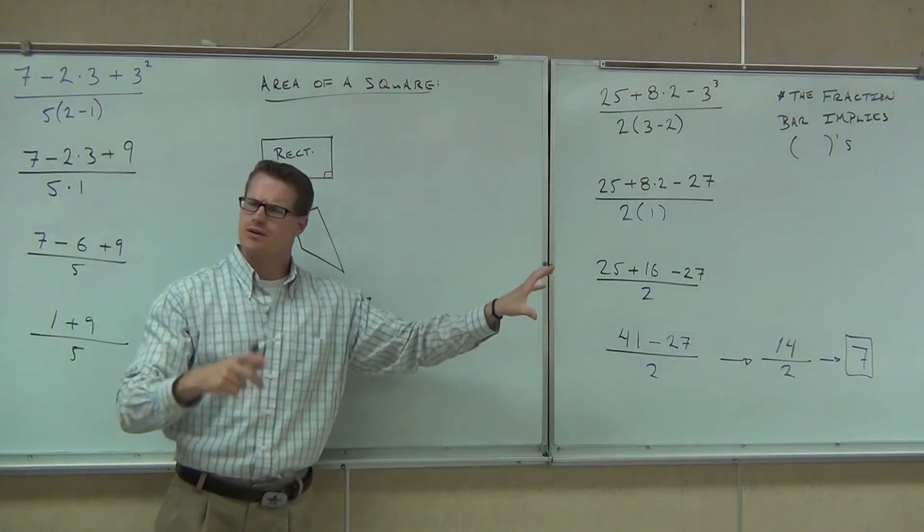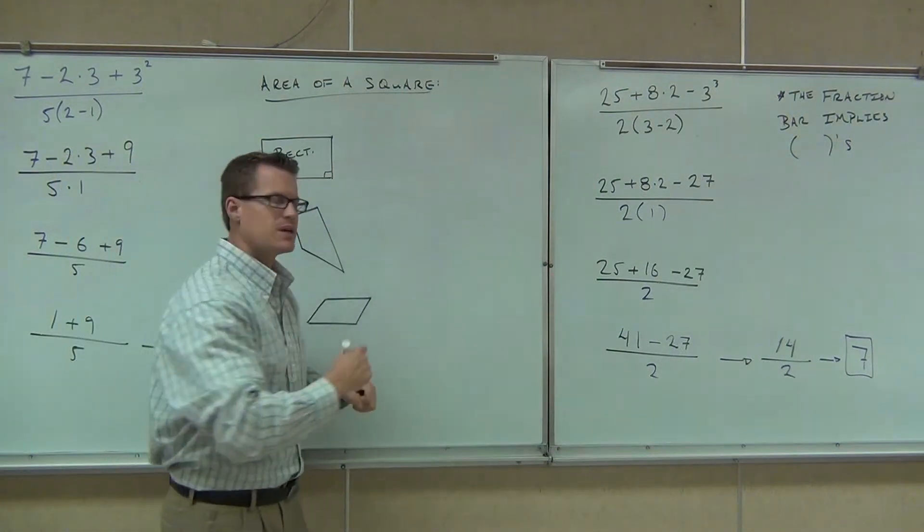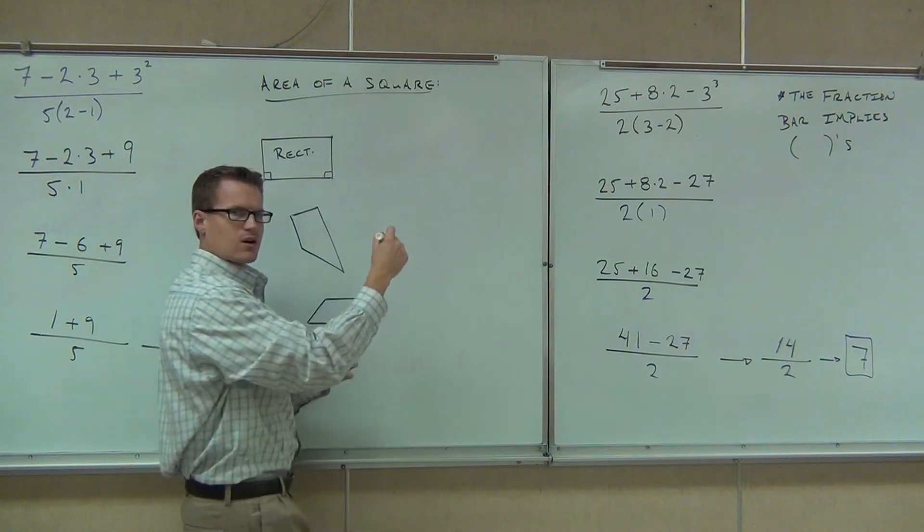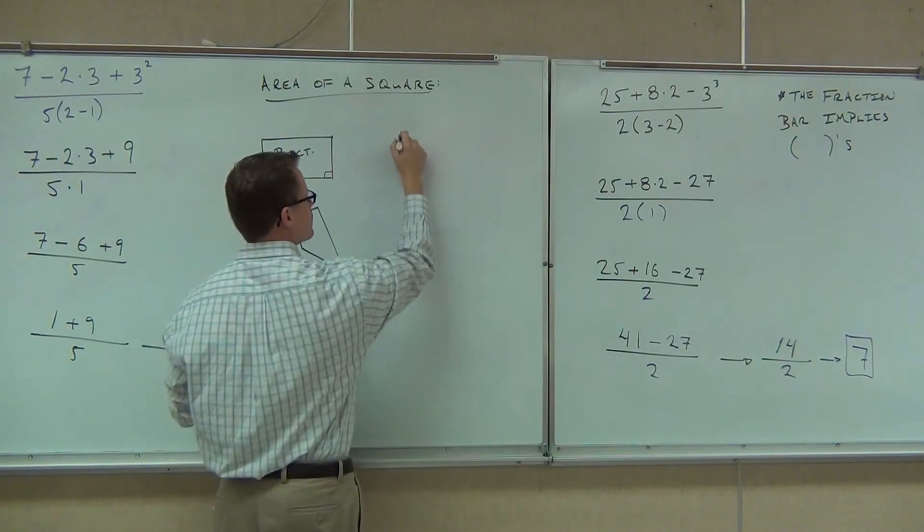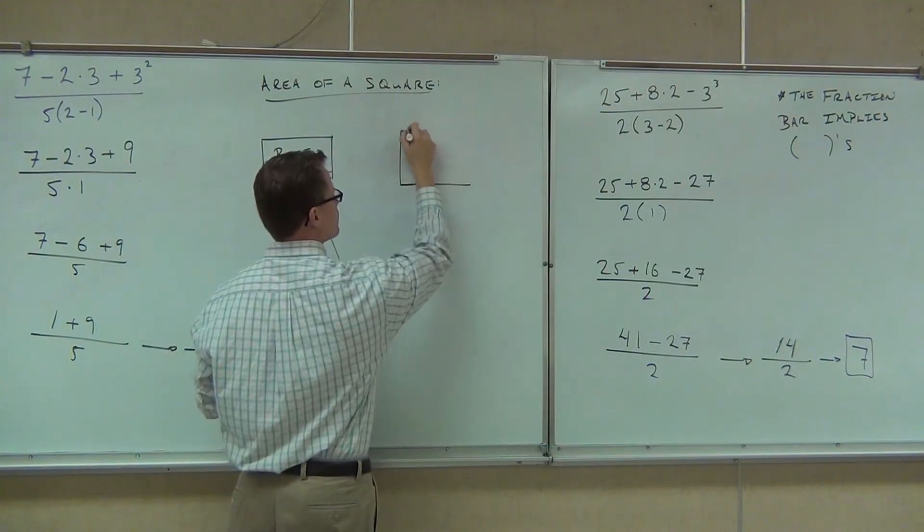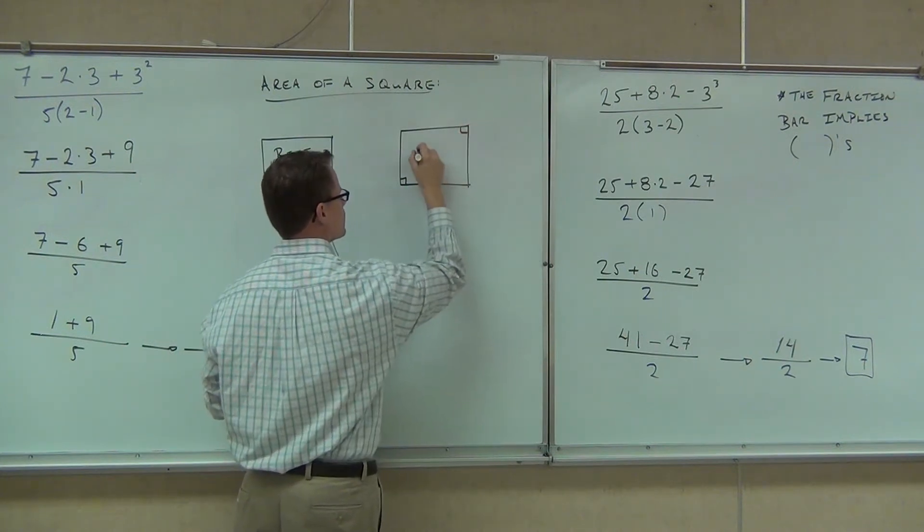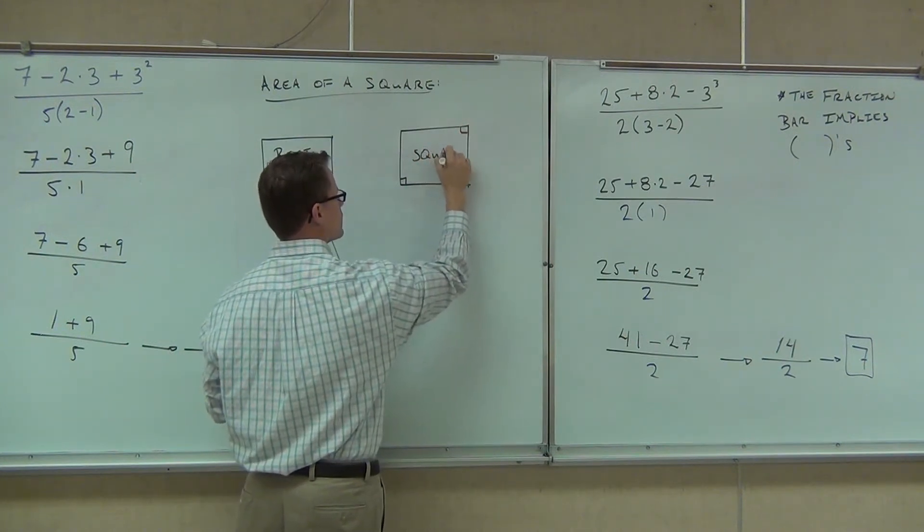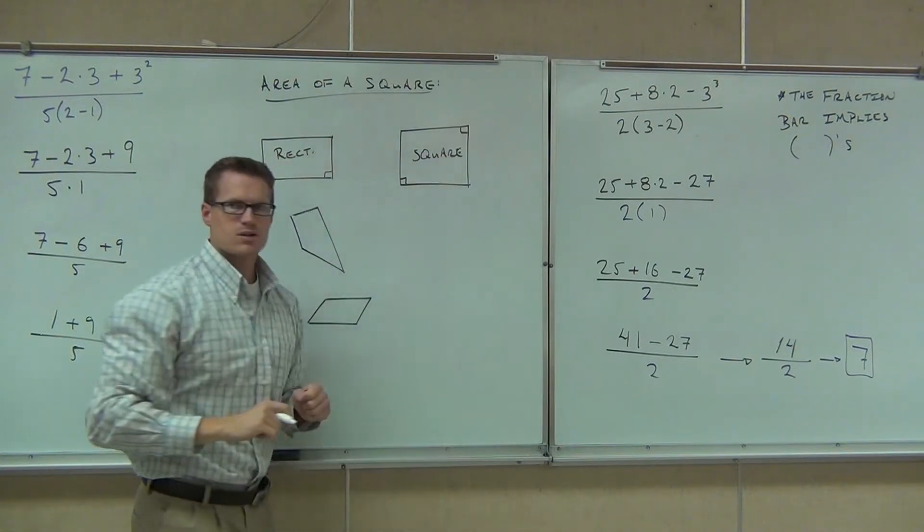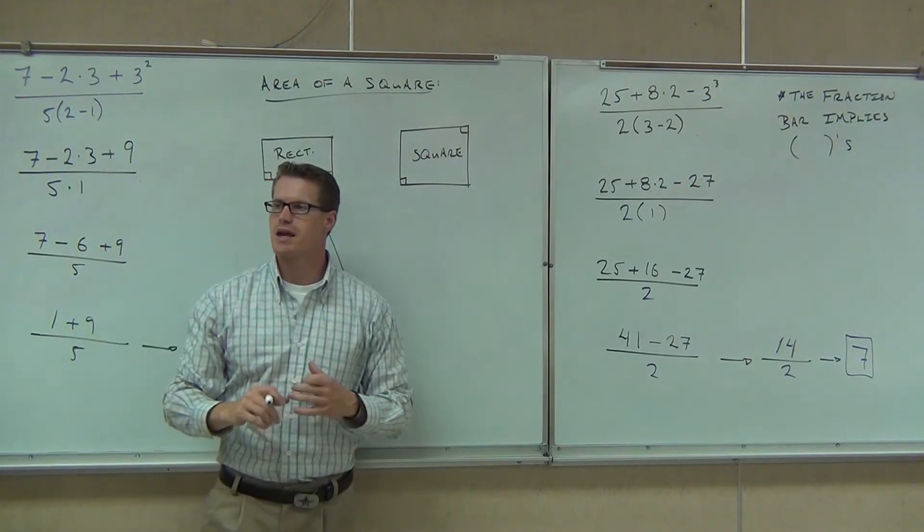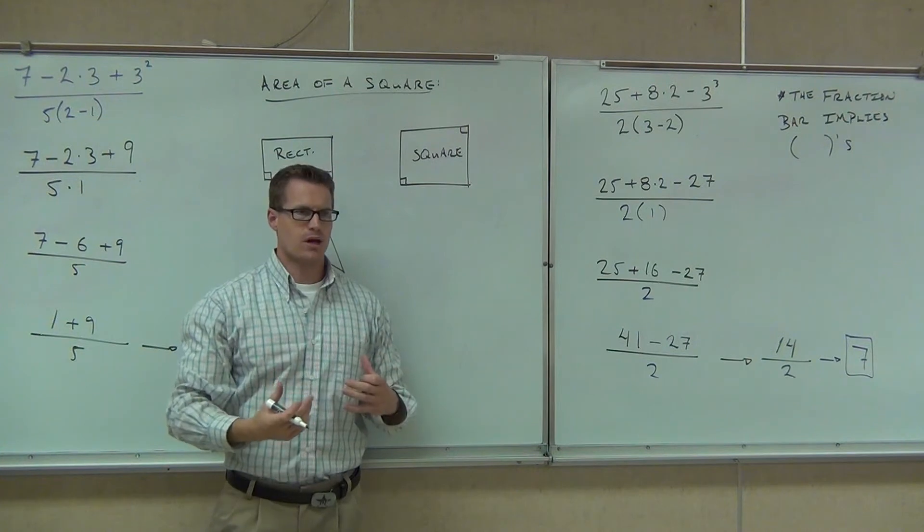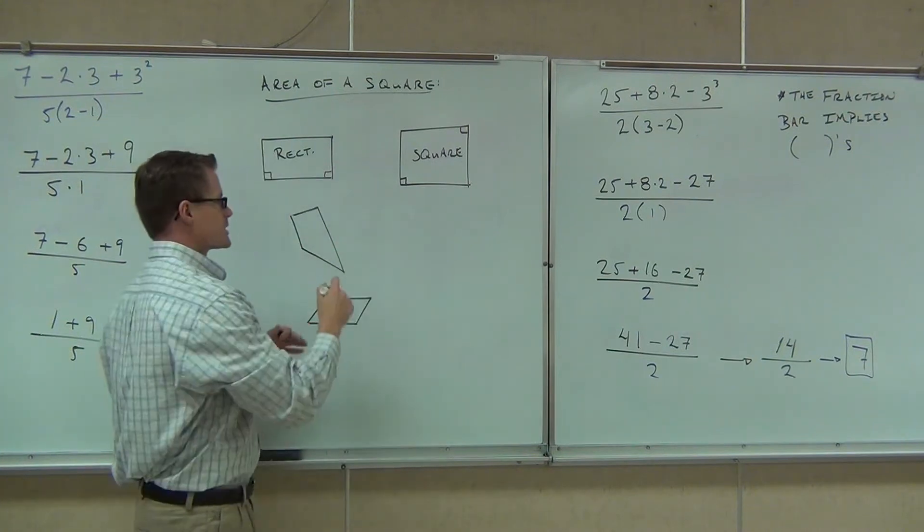A square is a type of rectangle, a very special rectangle. What that means for us, if a square is a type of rectangle, we should be able to find the area exactly the same way.